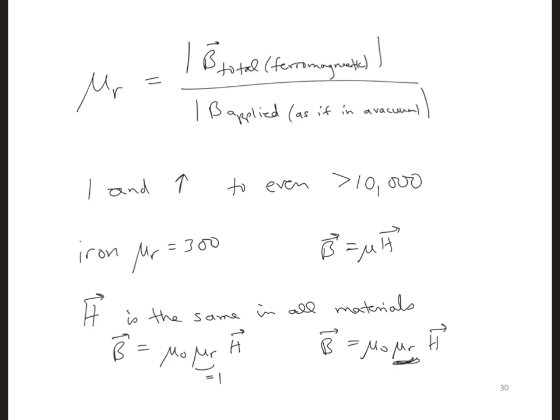All right, take out your in-class project notebooks one last time and describe how we can use less current in our wire loops if we have a ferromagnetic material inside the wire loops of the magnetotorquer.